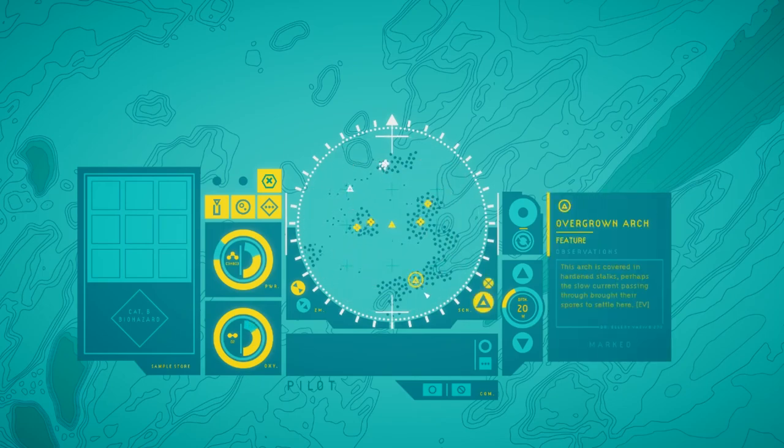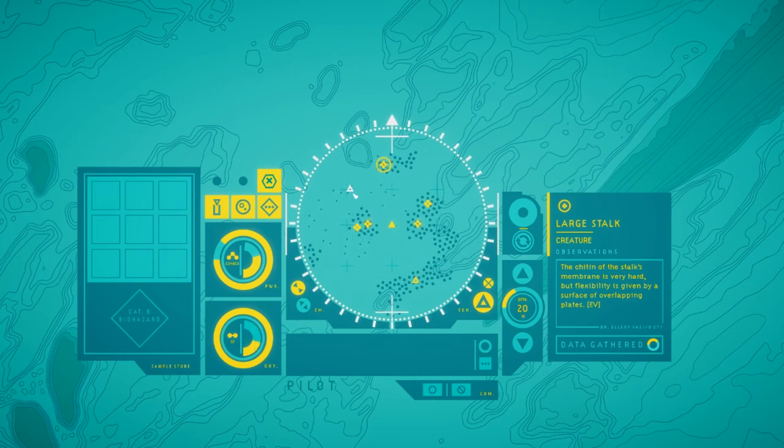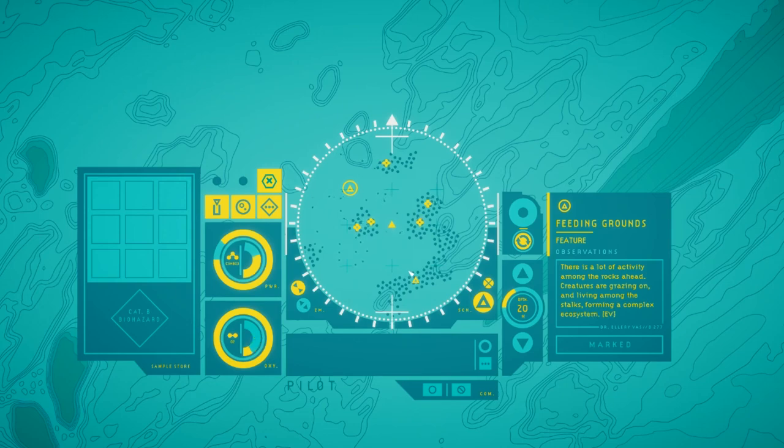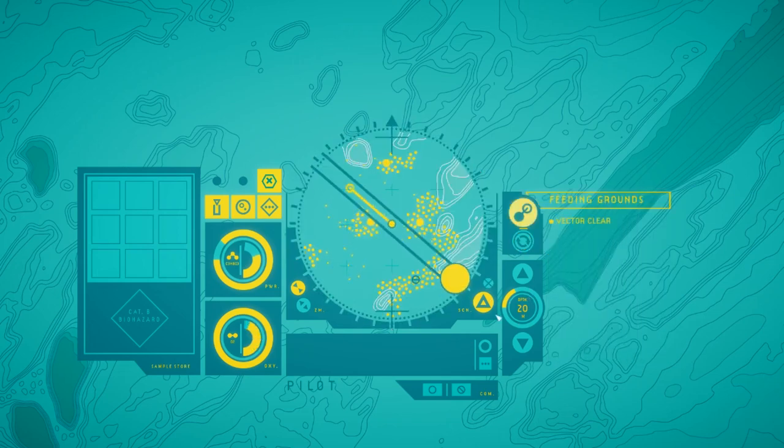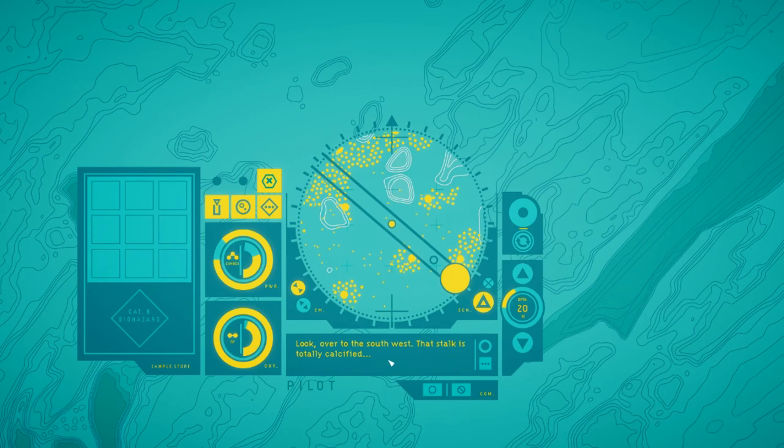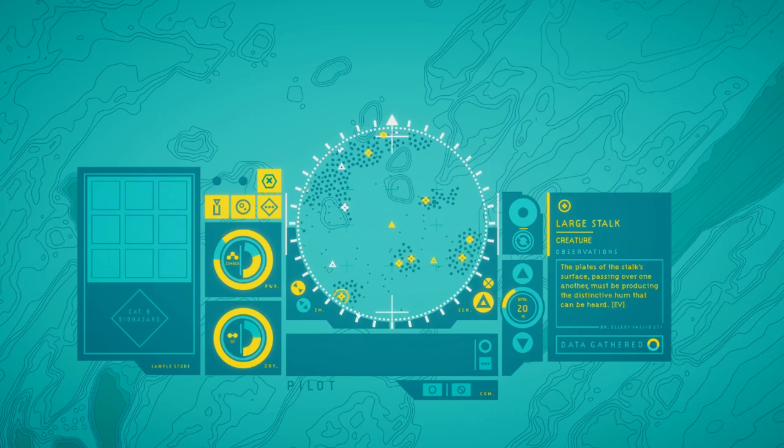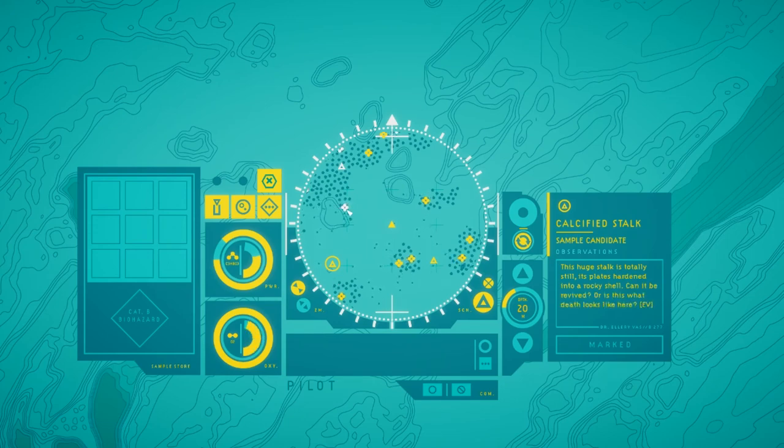Scan around. The giant of the stalks membrane is very hard, but flexibility is given by a surface of overlapping plates. Feeding grounds. A lot of activity among the rocks ahead. Creatures are grazing on and living among the stalks. Form a complex ecosystem. Let's add it this way. Look over the southwest. The stalk is totally calcified. Looks like a good sample can in it. The plates of the stalks surface passing over water. It must be reducing a distinctive hum that can be heard. Calcified stalk. This huge stalk is totally still. It's placed hard into a rocky shell. Can it be revived? Or is this what death looks like here?